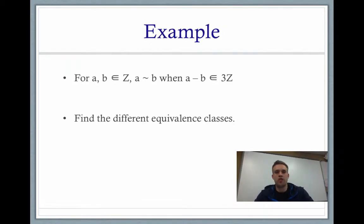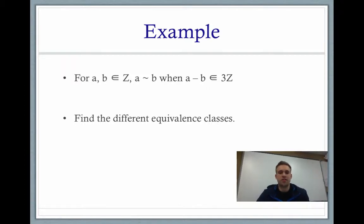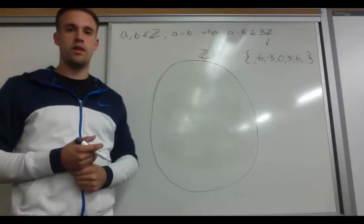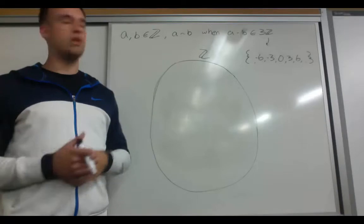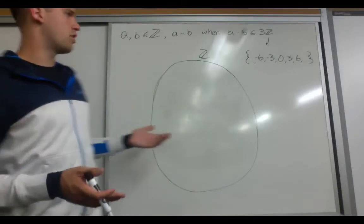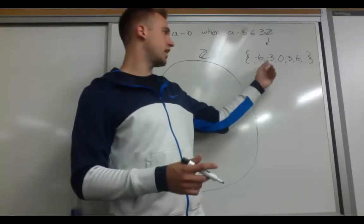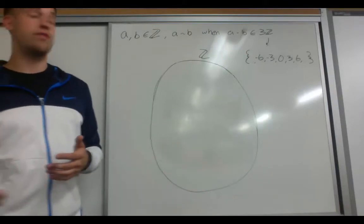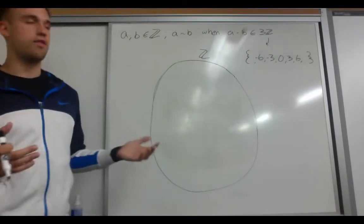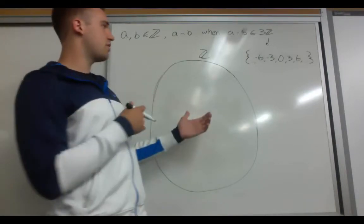The example we're going to work with is: for all A and B in the set Z, A is equivalent to B when A minus B is in 3Z. Our set 3Z contains integers such as negative 6, negative 3, 0, 3, and positive 6, going on to infinity in both the positive and negative direction by adding or subtracting 3. So that's our set 3Z.